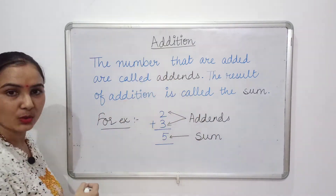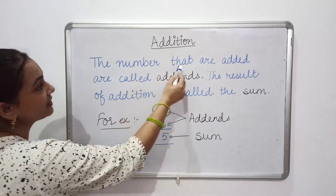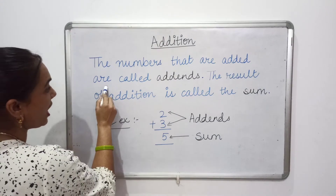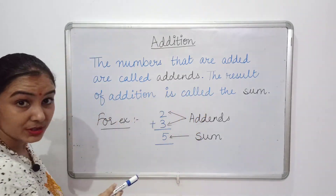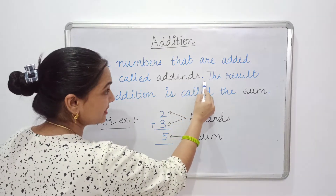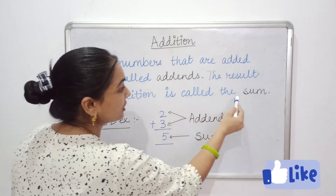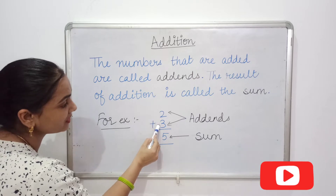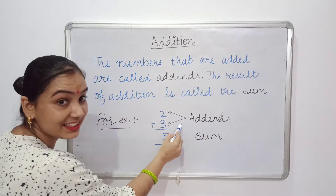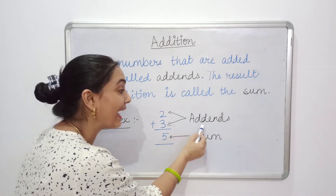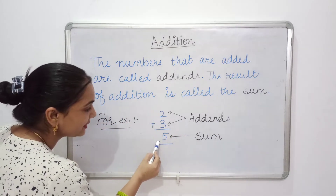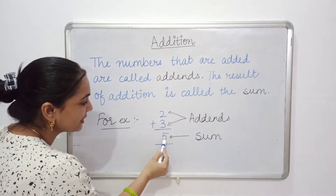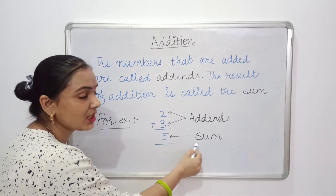First of all we will talk about addition. The numbers that are added are called addends, and the result of addition is called the sum. For example, 2 and 3 — these two numbers are called addends. When they are added, the result is called the sum. So 2 plus 3 equals 5, and 5 is the sum.